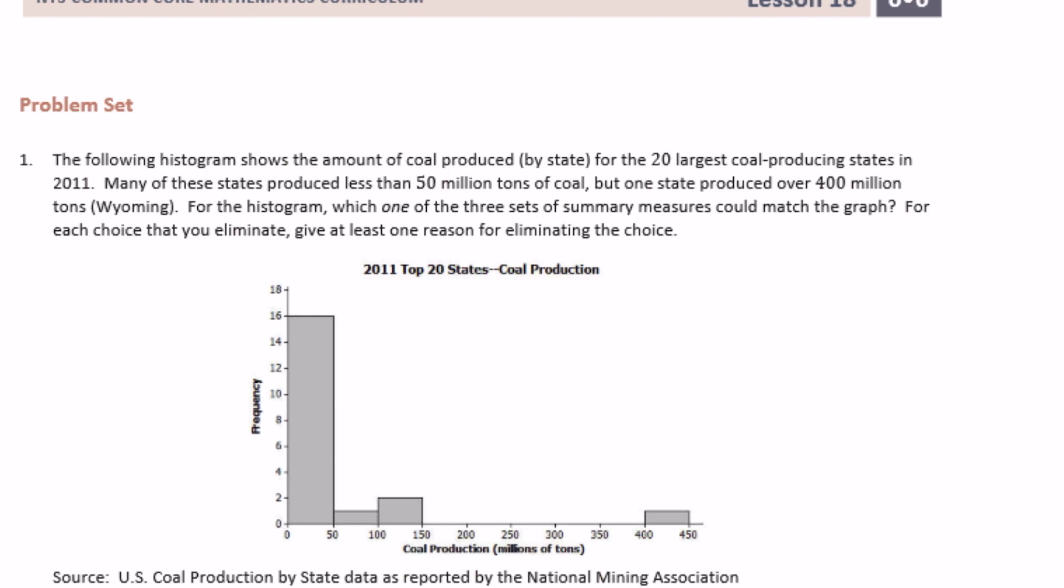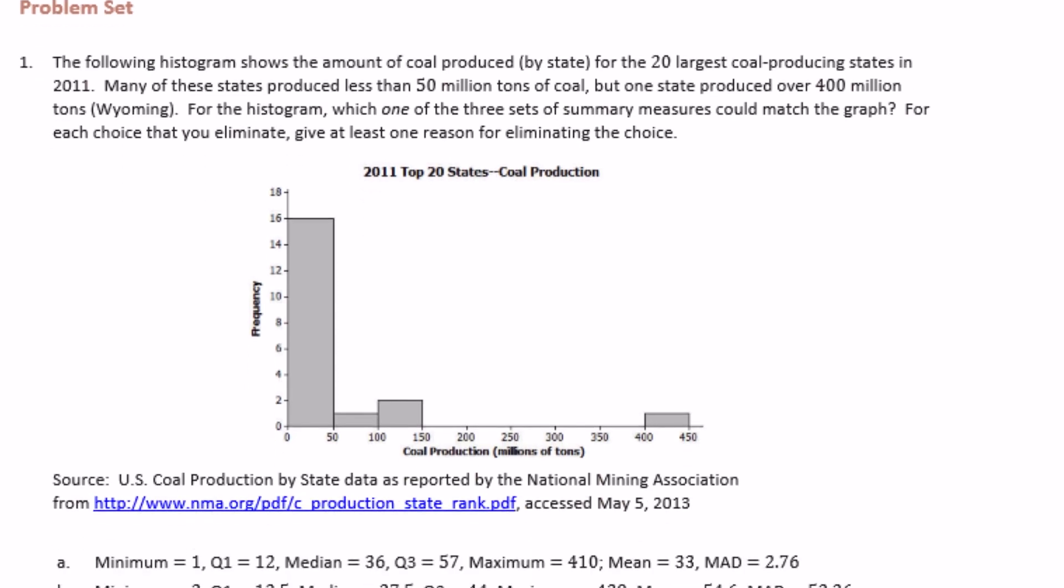Sixth grade module 6 lesson 18 problem set number one. The following histogram shows the amount of coal produced by state for the 20 largest coal-producing states in 2011. So it's 20 data points. Many of these states produced less than 50 million tons of coal, but one state produced over 400 million tons, Wyoming. Most of the states produced less than 50 million, so we can see that the vast majority of the data is from 0 to 50 on the histogram.